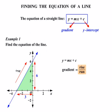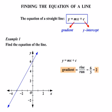For our rise over run, we've got a rise of six over a run of three. Six divided by three is equal to two. So we know our gradient is equal to two, and therefore our m-value is equal to two.